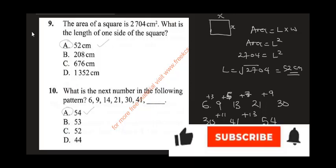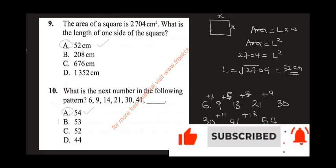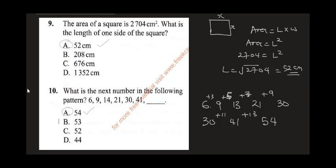Question 11 says: a football match starts at 2:45 p.m. After 45 minutes there was a 15-minute break. The match then took 15 minutes to end. At what time in 24-hour format did the match end? The match started at 2:45 p.m. and they played for 45 minutes.